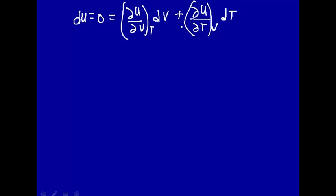Now, if the sum of these two terms has to equal zero, then — unless the very unlikely chance that one is exactly the negative of the other — this implies each term has to equal zero. There's no reason to suppose that one would be the negative of the other since volume and temperature are independent. Now, dV in this case is not equal to zero — you're changing the volume of the gas as it expands.